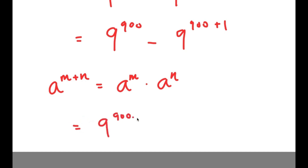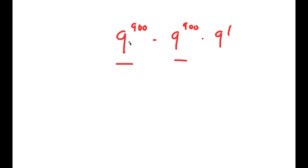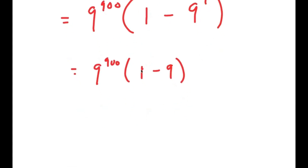So I get 9 to the power of 900 minus 9 to the power of 900 times 9 to the power of 1. Now from here, these two terms both have 9 to the power of 900 in them. So I'm going to factor out 9 to the power of 900, which is what I said I was going to do at the beginning of the video. I get 9 to the power of 900 times 1 minus 9 to the power of 1. This equals 9 to the power of 900 times 1 minus 9, since 9 to the power of 1 is just 9. And 1 minus 9 equals negative 8, so I get 9 to the power of 900 times negative 8.